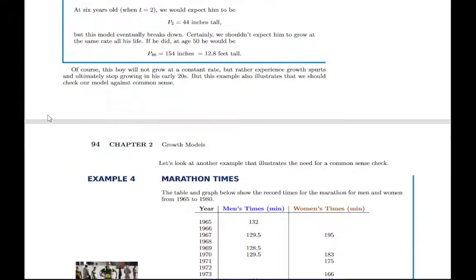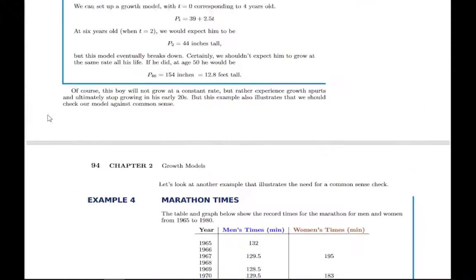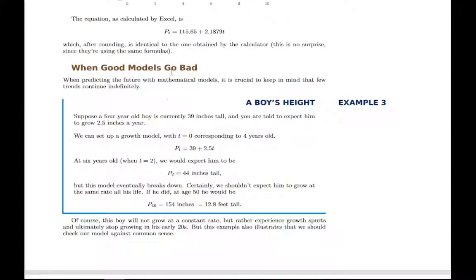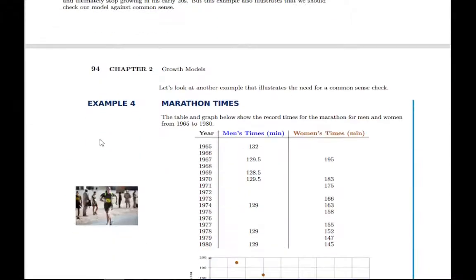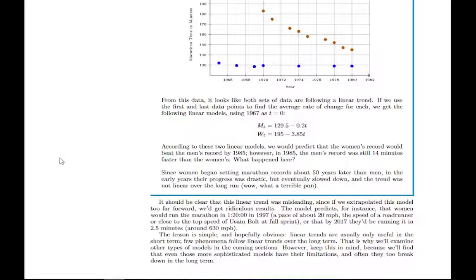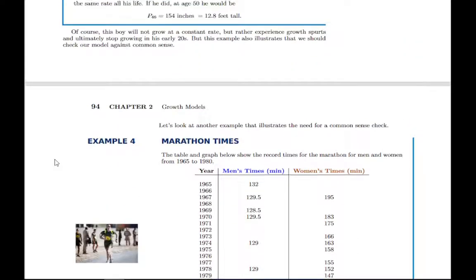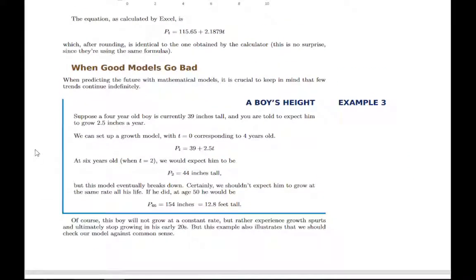There are a couple examples here at the end that just give you a couple things to think about with linear models. There are times that linear models, if you try to predict too far forward with them, you get kind of unrealistic results. These examples just kind of highlight that reality and give you a sense that sometimes you have to apply common sense to a linear model and notice that it's maybe not going to always be linear. Maybe the model will change in the future.